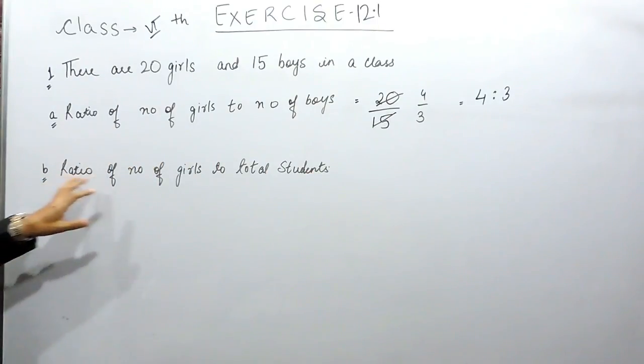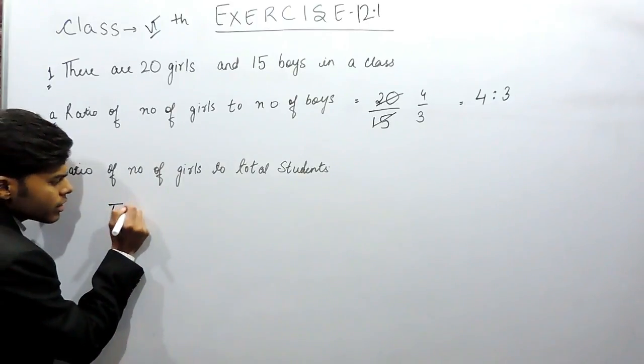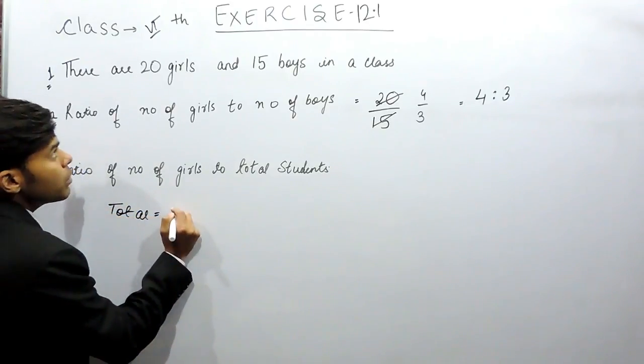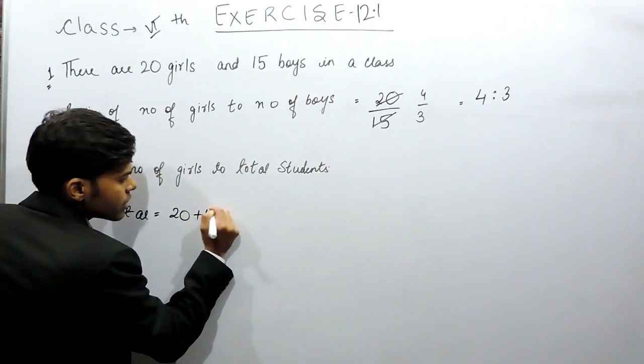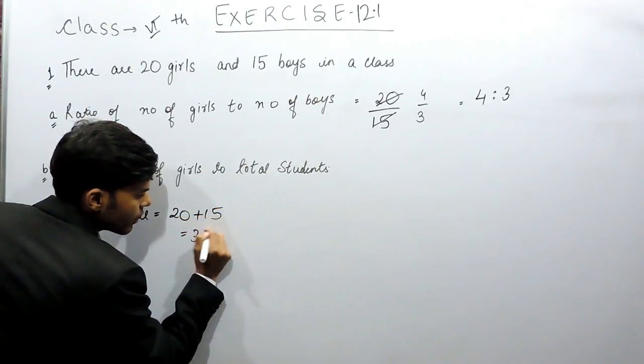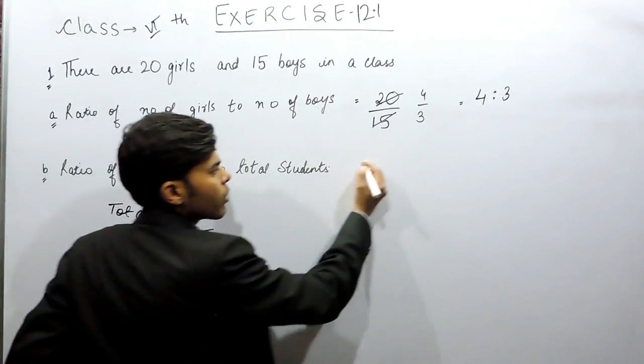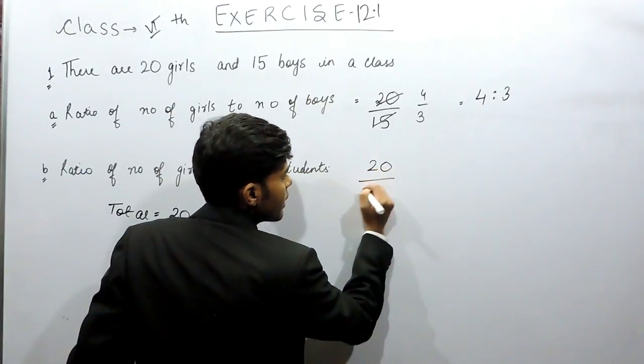In part B it says that number of girls to total students. So first of all, we'll find the total students. The total will be equals to girls plus boys, that will be equals to 35 and the ratio will be equals to number of girls, that is 20 by 35.